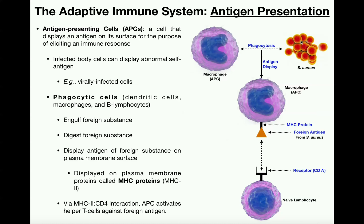I'll give you an analogy for antigen presentation — it's like being on the FBI's most wanted list. Being on the most wanted list doesn't do any good if you don't have the person's name or picture. You need to know some information about the person so people know what to look out for. The two main things you put on the most wanted list are the perpetrator's name and their picture, so people know who to watch out for, and if somebody spots the person they'll contact the authorities.